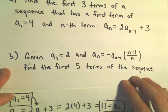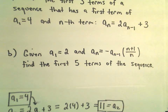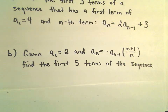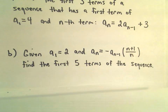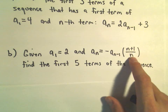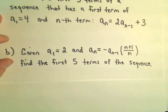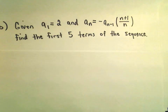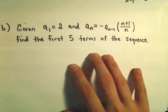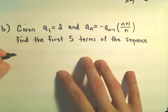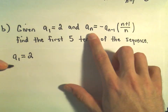Let's do one more. Suppose we're given that a sub 1 equals 2, and our a sub n is given by negative a sub n minus 1 times the quantity n plus 1 over n, and we want to get the first five terms of this sequence. With the fraction here it might be a little more tedious, but same idea. We know a sub 1 equals 2 — that's given to us.